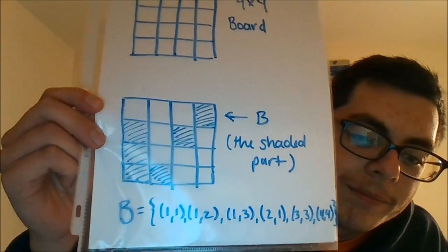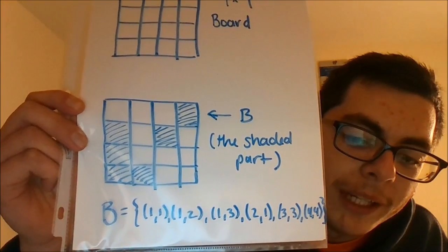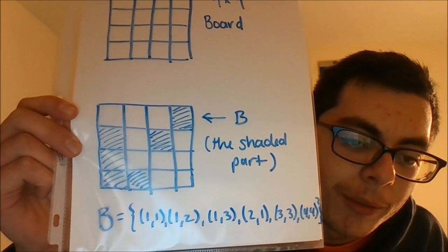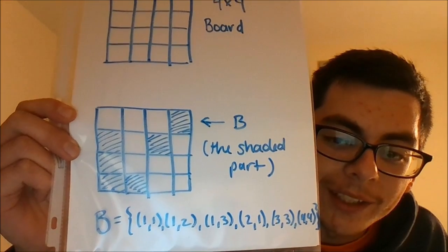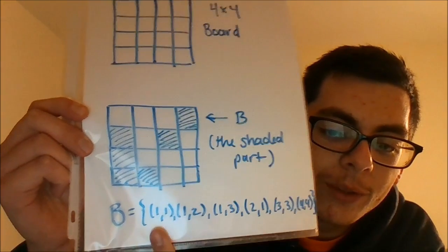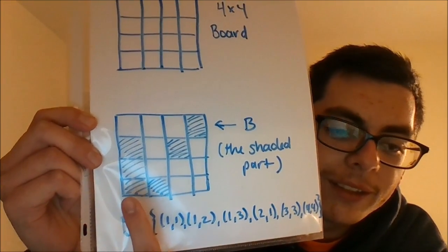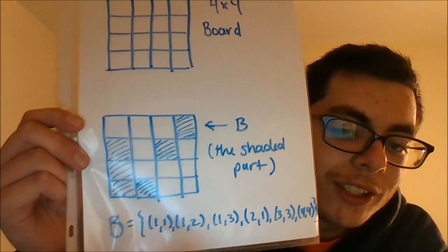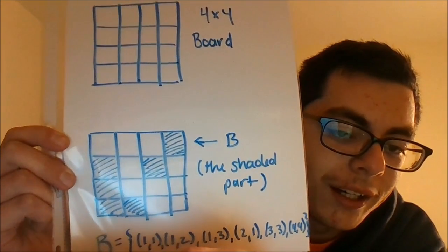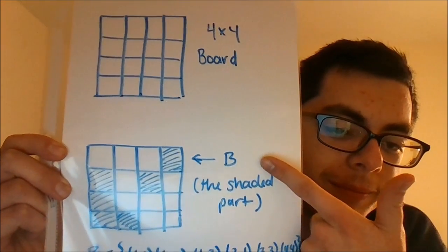For example, we have that. Where B is some subset of ordered pairs, where that pair corresponds to a specific square. So like, 1-1 is that square. So the shaded part is B. Once you have your board, you can place what we call Rooks on there.